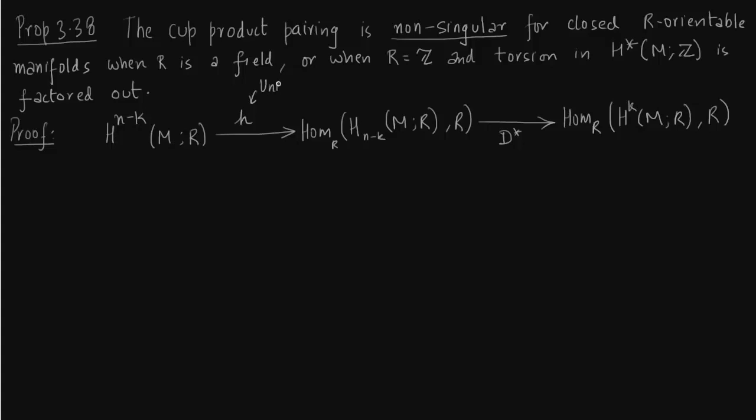So the first map h, this comes from universal coefficient theorem and the second map which is between H_(N-K) and H_K, as you can see the map between homology and cohomology has to come from Poincaré duality. Now since this is a map between homomorphisms we can say it is the dual map d*.